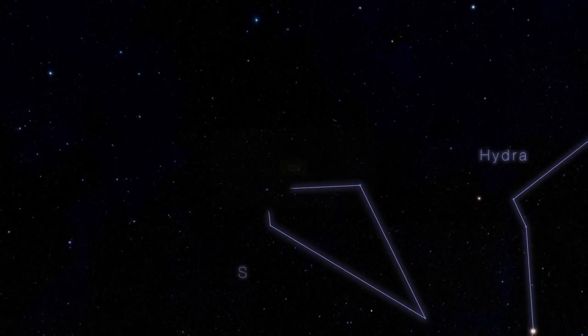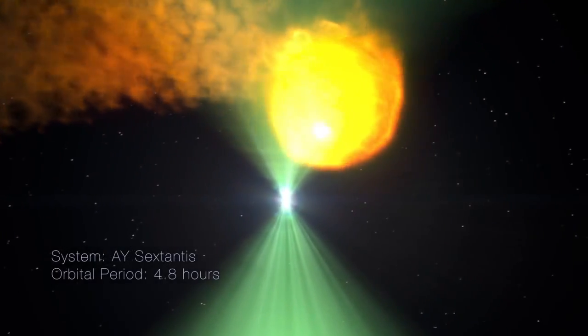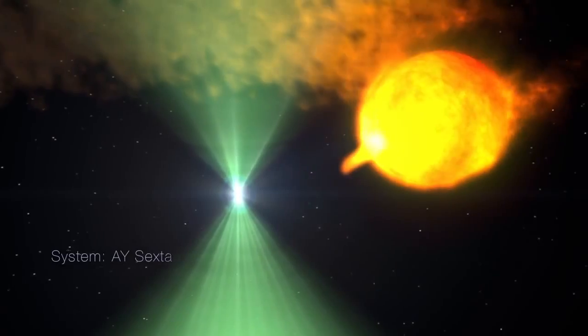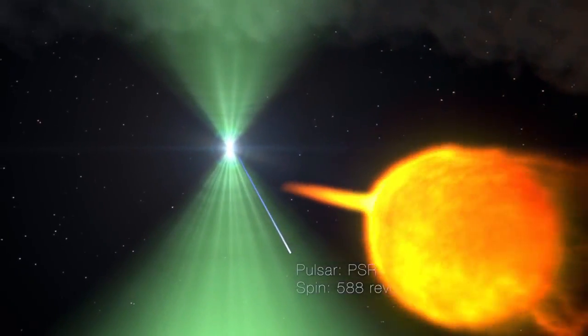About 4,400 light-years away, in the constellation Sextans, there is an extraordinary binary system that pairs a rapidly spinning neutron star, or pulsar, with a star about one-fifth the mass of the Sun. Thanks to its rapid rotation and intense magnetic field, the pulsar produces a strong radio signal.